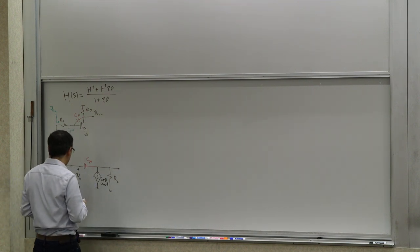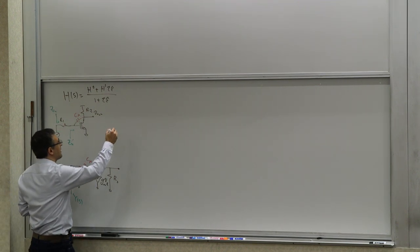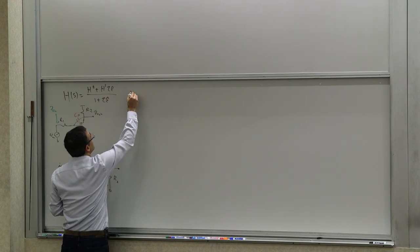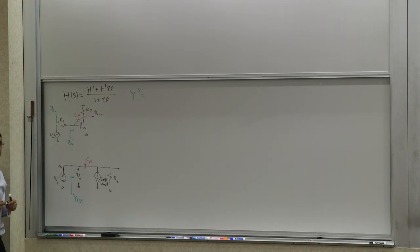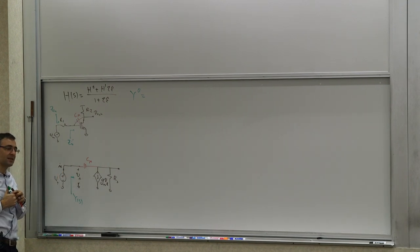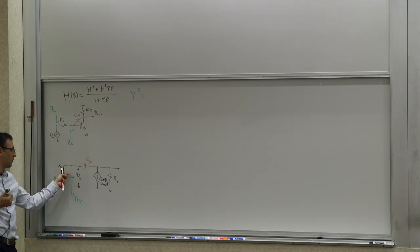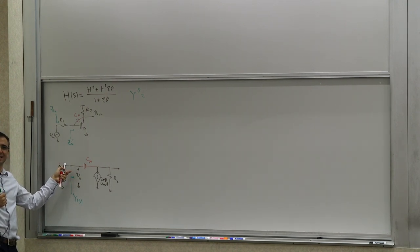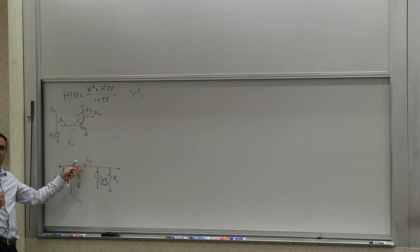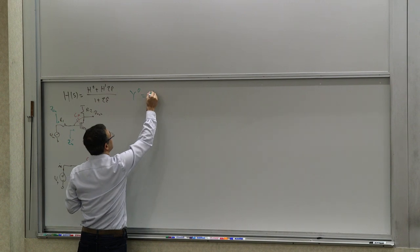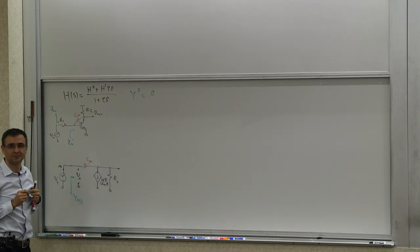To calculate Y(s), our method tells us we need to calculate Y0. Y0 is when the capacitance is zero, or open-circuited. When the capacitance is gone, the resistance you see here is infinity, so the conductance is zero. Therefore Y0 = 0.